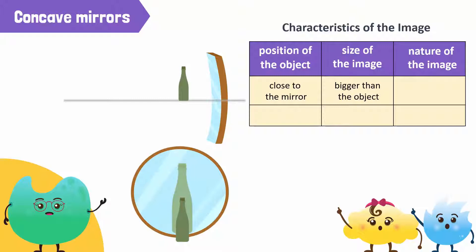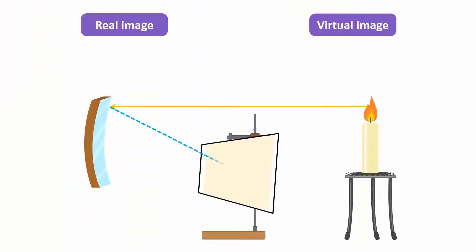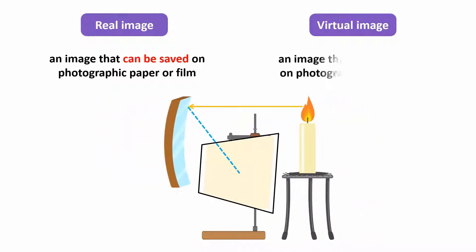What else can we say about the image of the bottle in the mirror? Is it upright or inverted? Is it real or virtual? How can an image be real? When we call an image real, we mean an image that can be saved on photographic paper, film, or that can be projected onto a cinema screen. Images that cannot be saved on film are virtual.